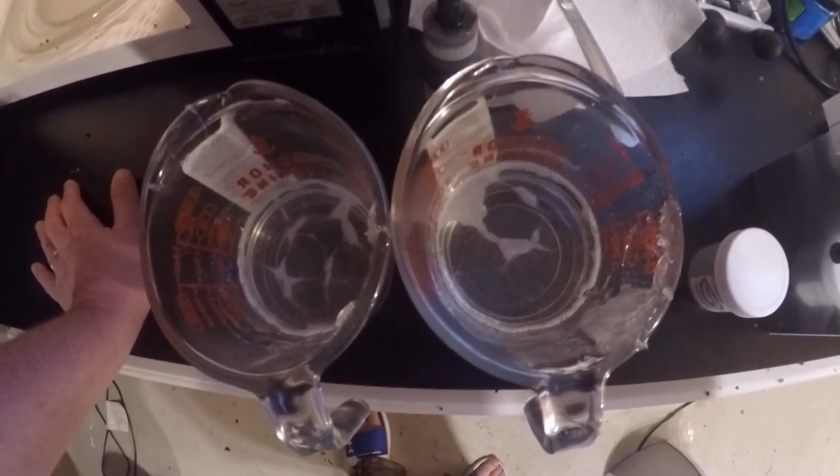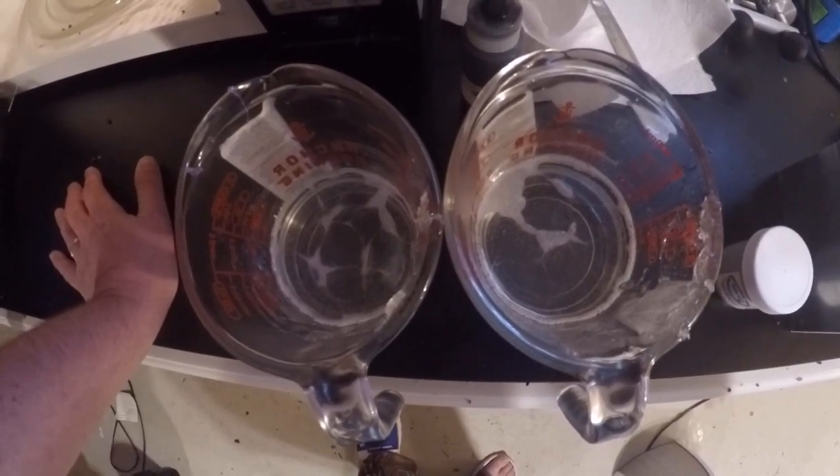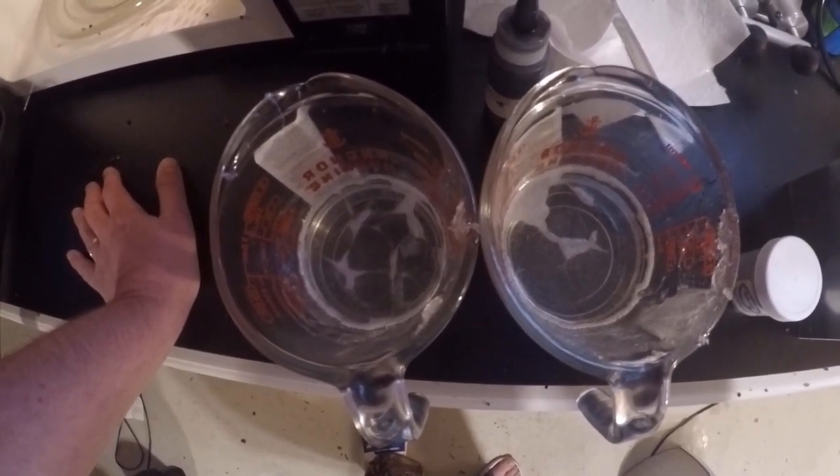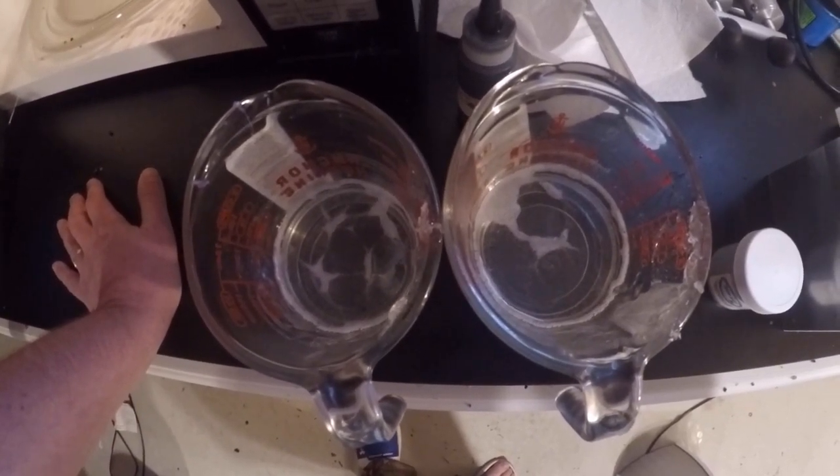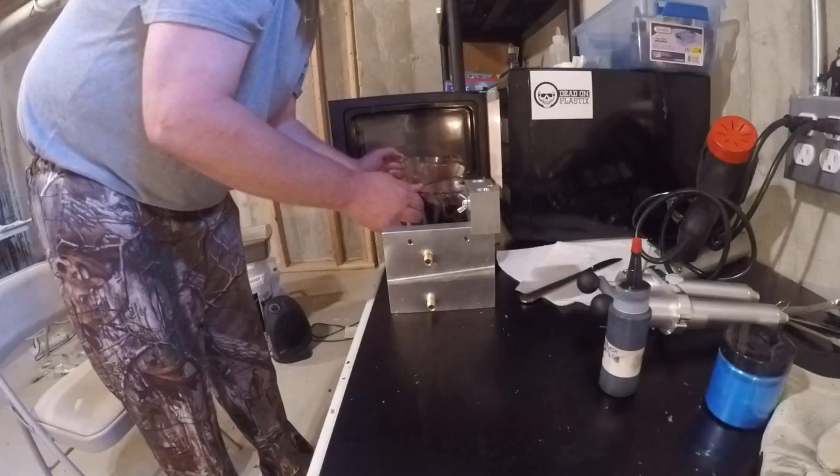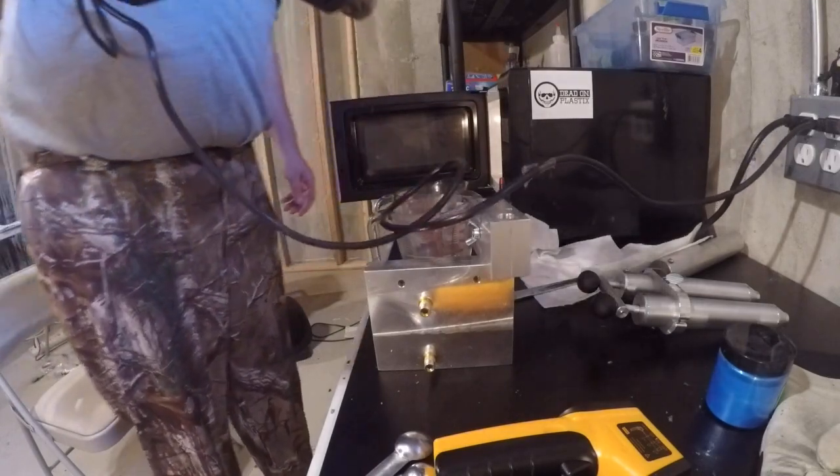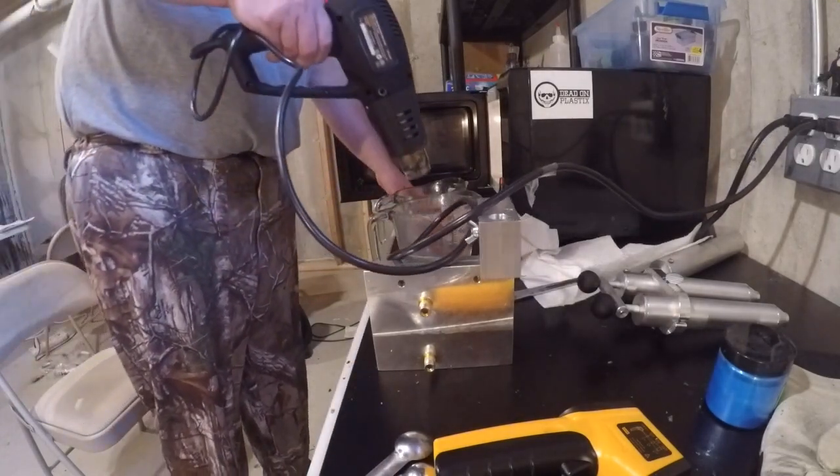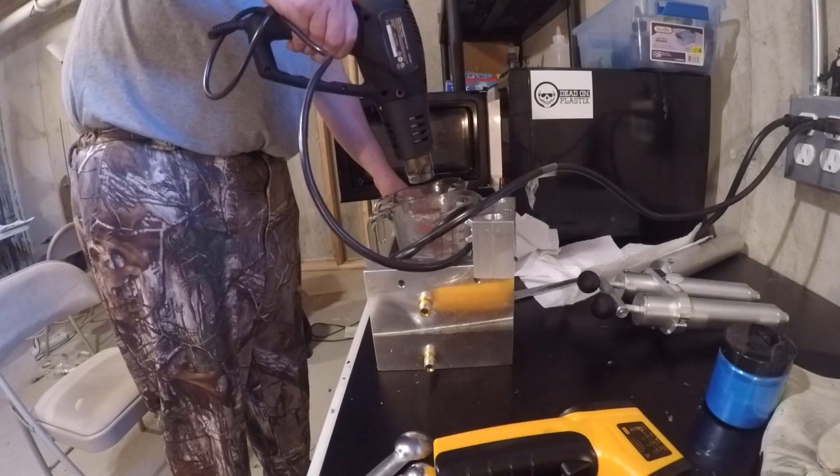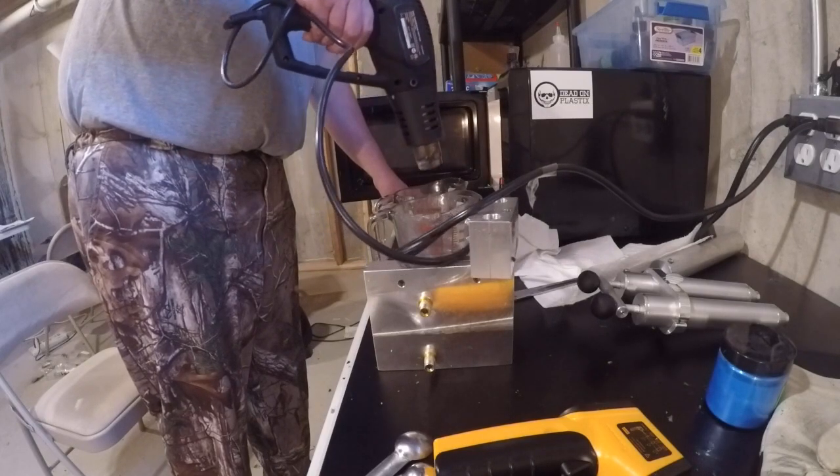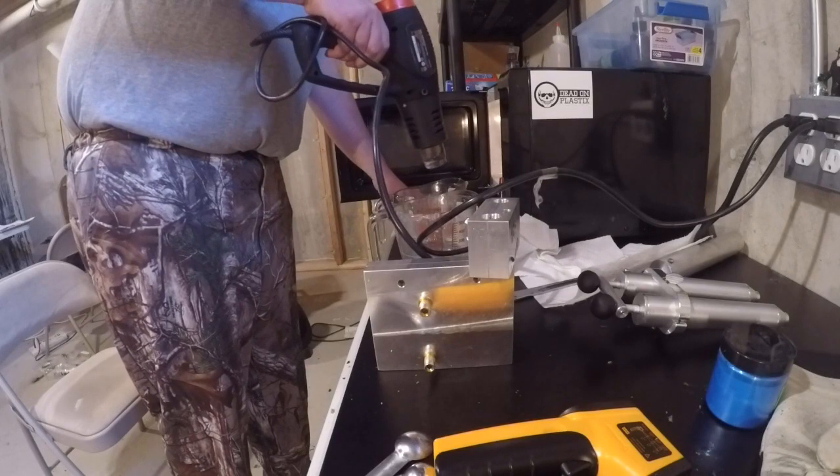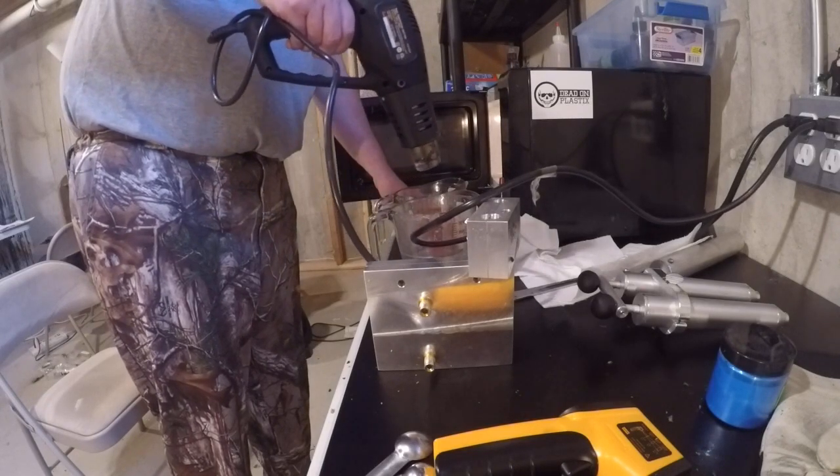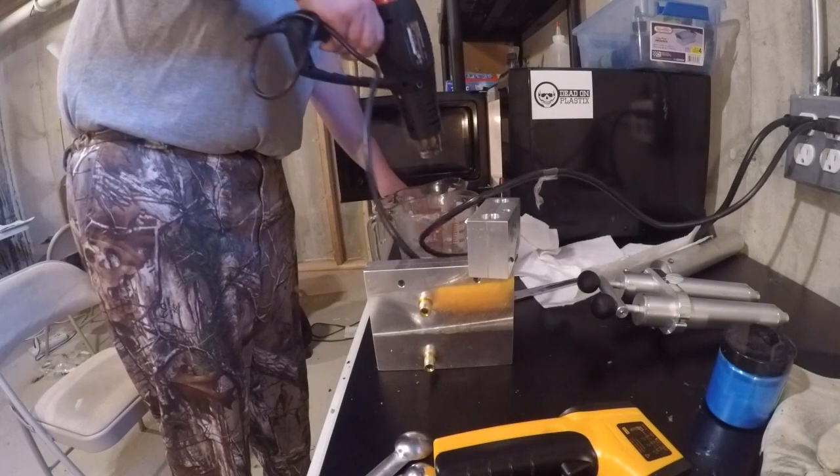I'm going to set the camera down and I'm going to hit this with the heat gun, try to pop some of those bubbles out of there, and then we'll get our colorant added in and we'll shoot some of these baits. Just a couple of seconds, doesn't take a whole lot but it really does help beat some of the bubbles out of the plastic. It's looking better already.